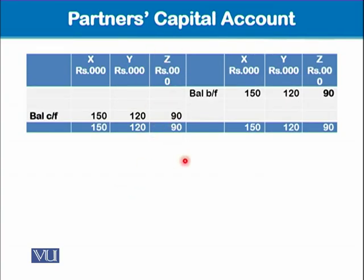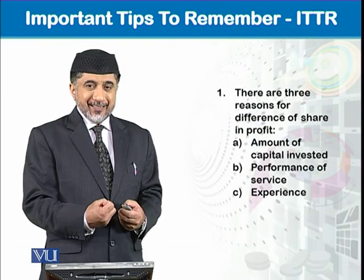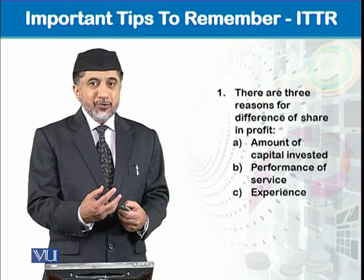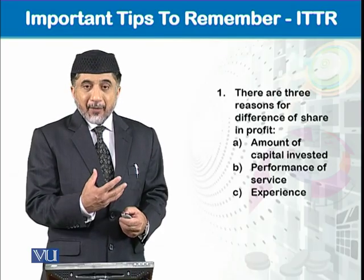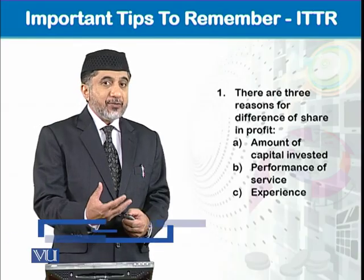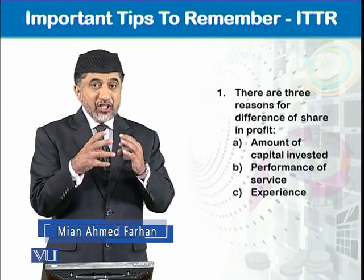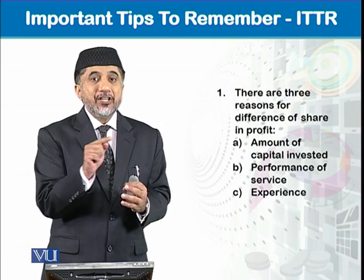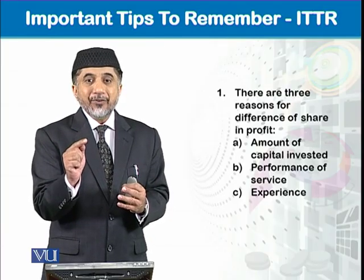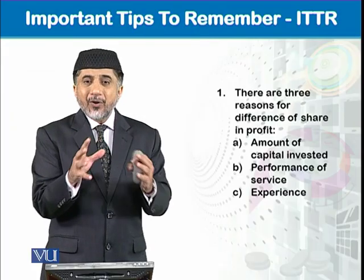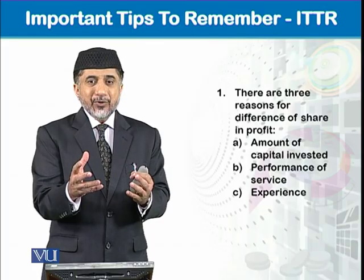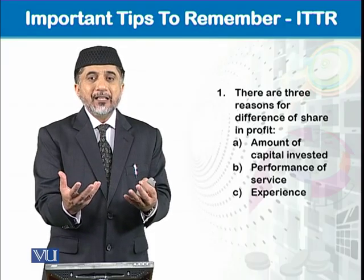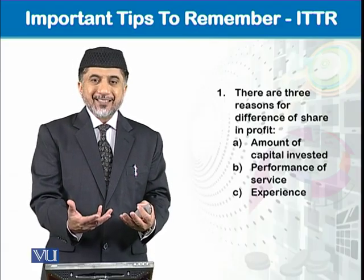As a key tip, there are three bases on which profit is distributed among partners: the amount of capital contributed, the performance of services, and their experience. These are worked out in the profit distribution statement, also known as the profit and loss appropriation account. Take all these things logically — it is simply about distributing profit among partners based on agreed bases, and that's it.